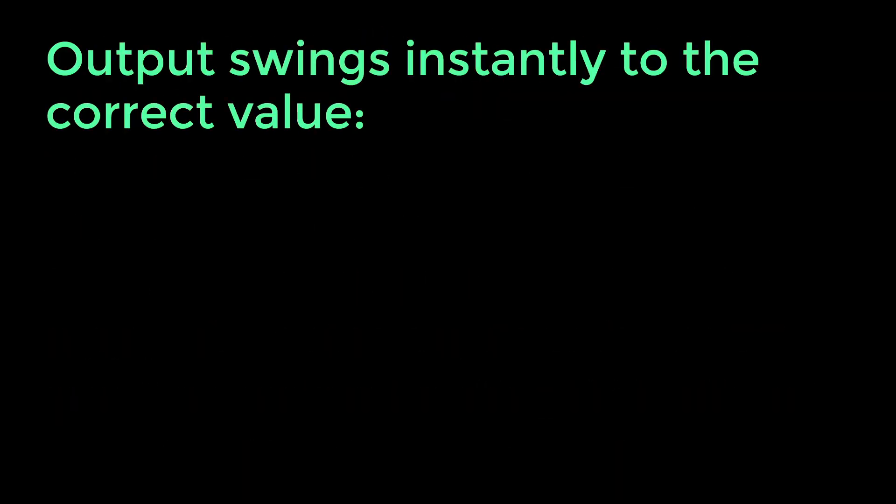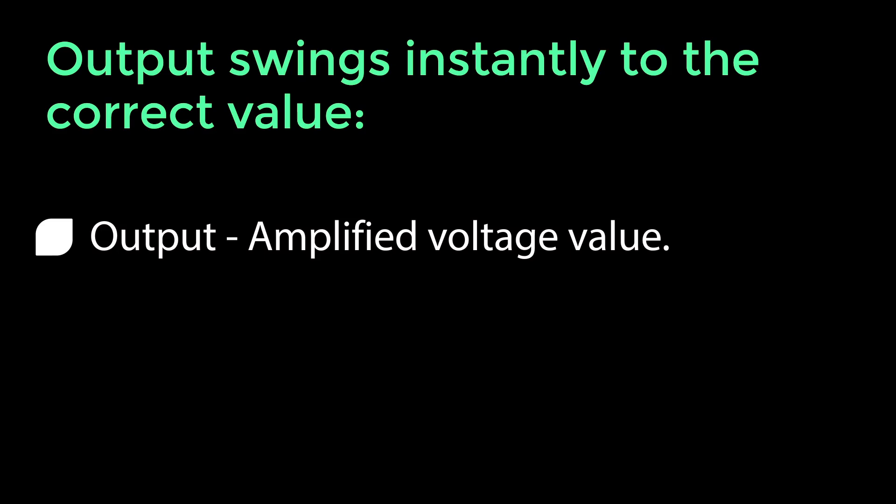Output swings instantly to the correct value. In an ideal op-amp, the output will swing instantly to the amplified voltage value. There will be no time delay between the time the voltage is input into the op-amp till the time it is output. It will all be instantaneous.